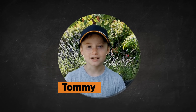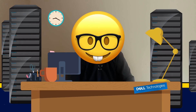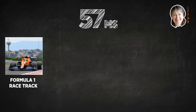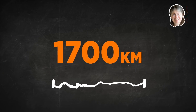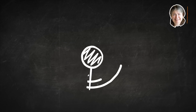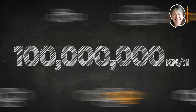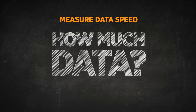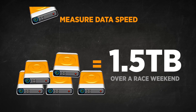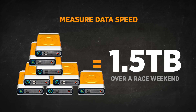How fast does data travel from the racetrack to McLaren Technology Center? Last weekend at the Hungarian Grand Prix, data sent from the track took only 57 milliseconds to reach the McLaren Technology Center — a distance of 1,700 kilometers — meaning the data travels at over 100 million kilometers per hour. Another way to measure data speed is volume: over a race weekend, McLaren collects over 1.5 terabytes of data, equivalent to streaming over 750 films.